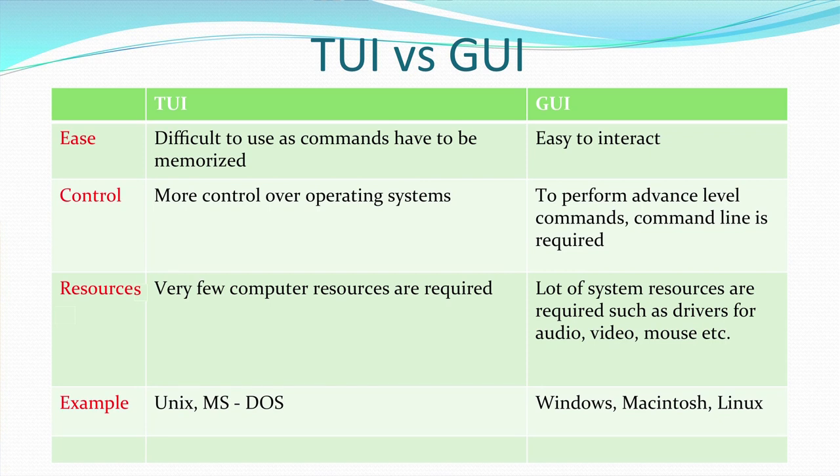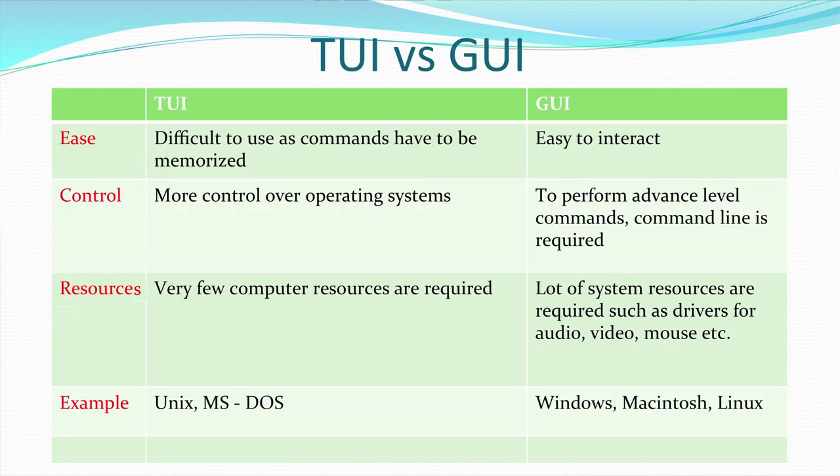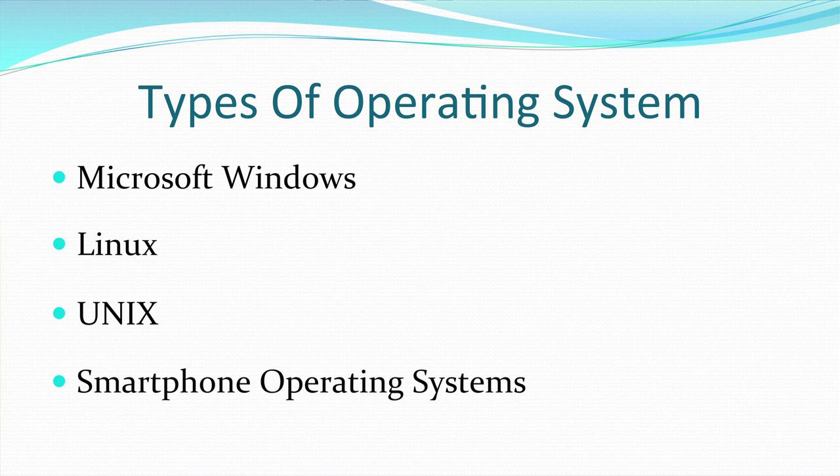The text user interface requires very few resources because input is only through the keyboard, whereas a graphical user interface requires many resources — keyboard, mouse, scanner, audio or video recording. In terms of examples, Unix and DOS are text user interfaces, whereas Windows, Macintosh, and Linux are examples of graphical user interfaces.